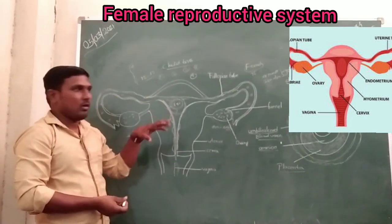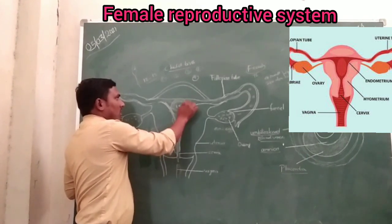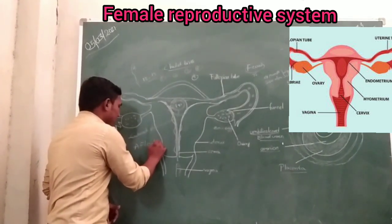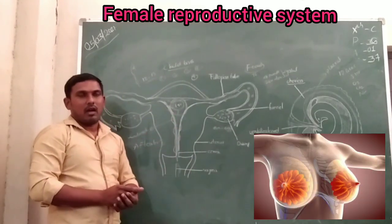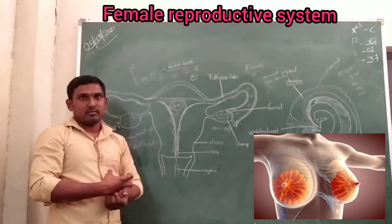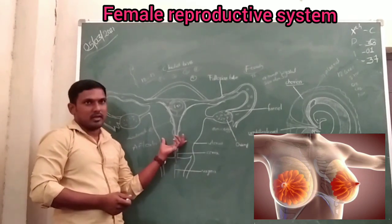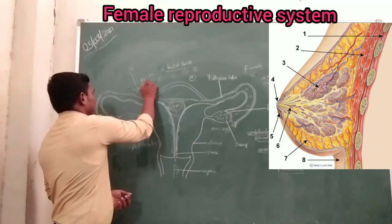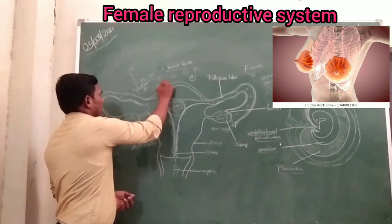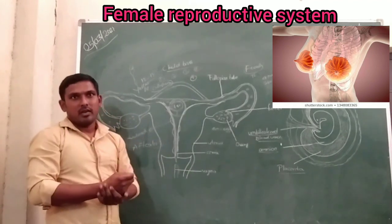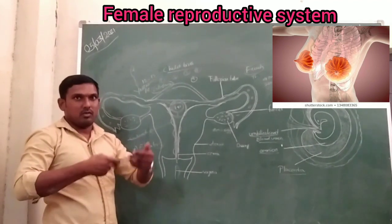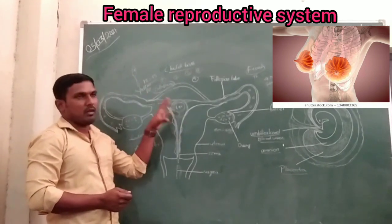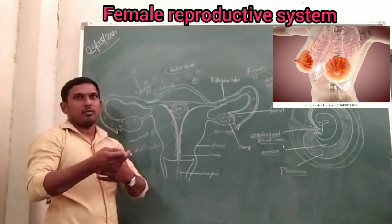After birth, structures like the chorion and placenta also come outside — this is called the afterbirth. After delivery, the mother's mammary glands are activated, producing milk. The first milk given to the baby is a yellow-colored fluid called colostrum, which is compulsory feeding for the baby as it increases the baby's immune system.